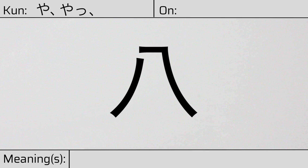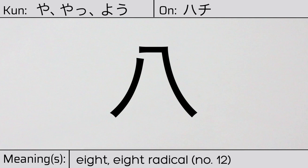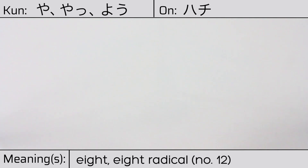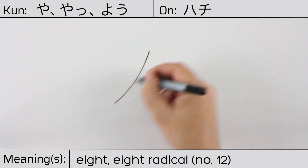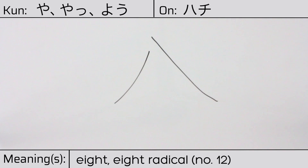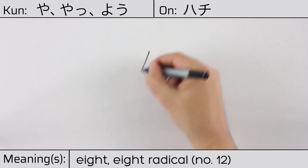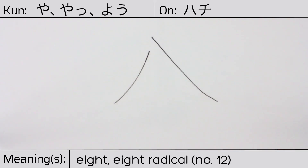This kanji has kunyomi or Japanese readings of ya, ya, or you, and it has an onyomi or Chinese reading of hachi. This character has the meanings eight or the eight radical. Here is the stroke order. This character is made up of the following radicals or parts — itself — and is used in many other compound characters.